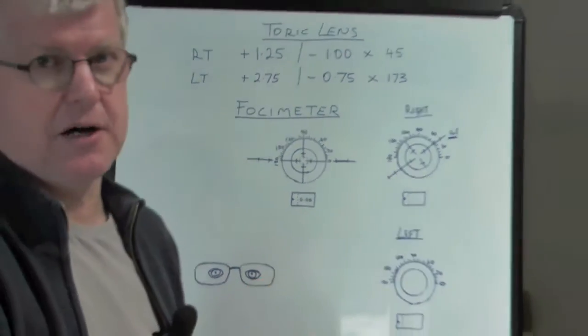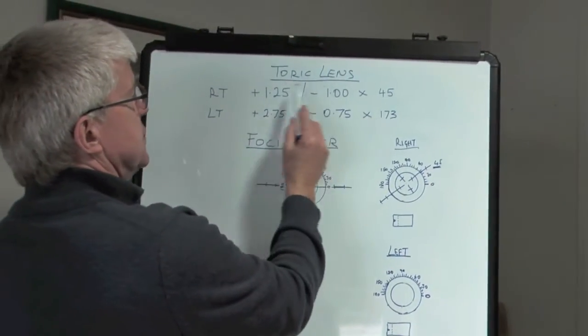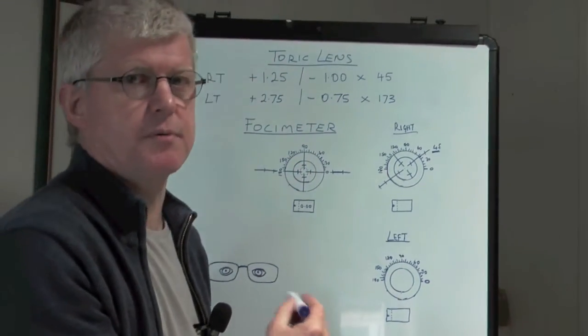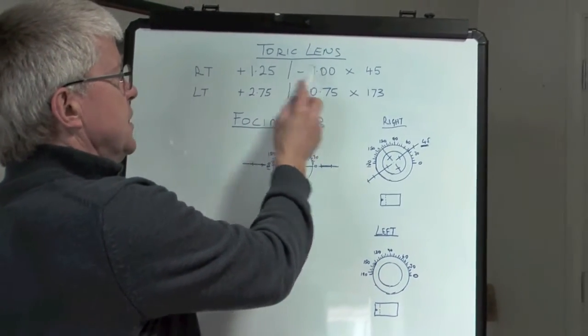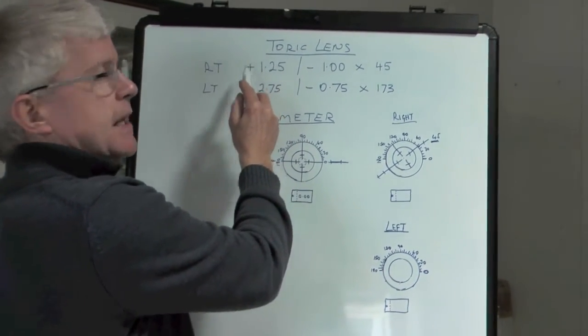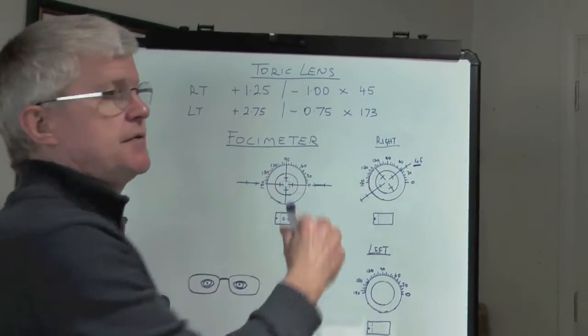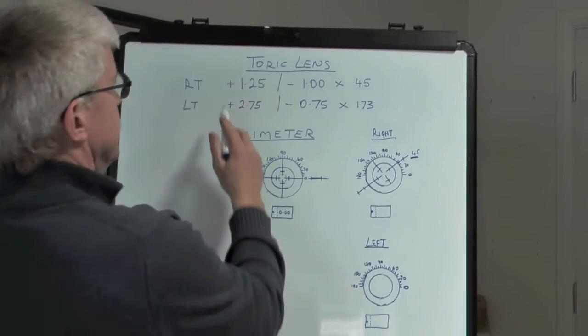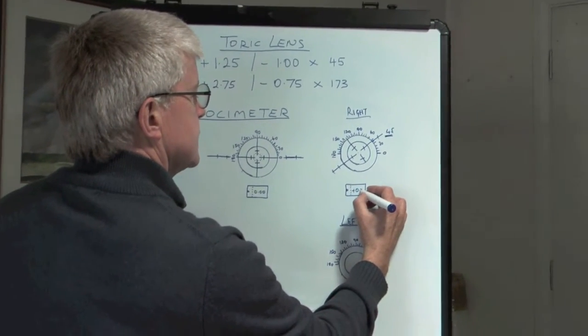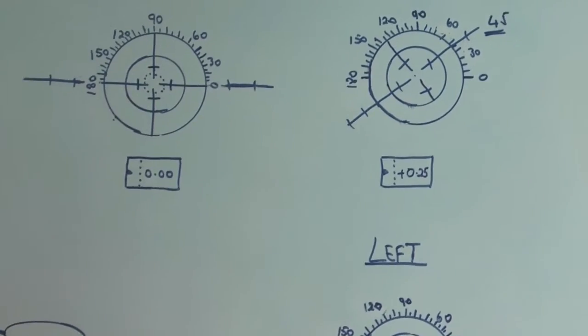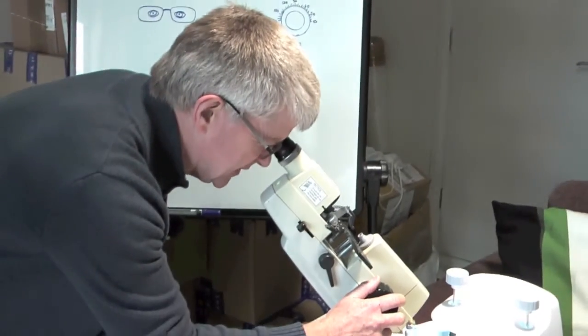Now let's set the power. The power that you want to see in this window is the sum of these two powers. When the signs are different, you take the smaller number away from the larger number, but you keep the sign of the bigger number. So you've got 1.25 minus 1, which leaves you with 0.25, but you've got a plus, so it's plus 0.25. So I'm going to set the focimeter now to plus 0.25.